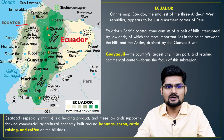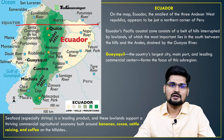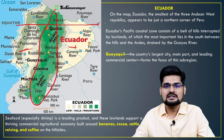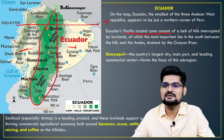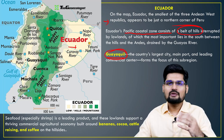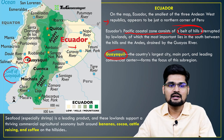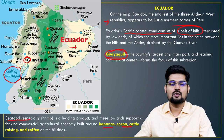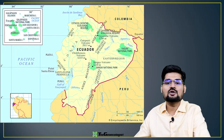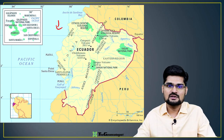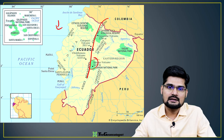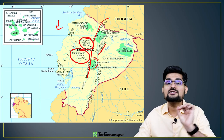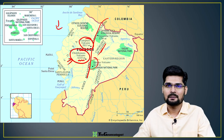Ecuador gets its name from the equator passing through it. The central region is the Andean mountain, which divides the country into east and west. The Ecuador Pacific Coastal Zone consists of a belt of hills interrupted by lowlands. Guayaquil is the major commercial center, situated in the Gulf of Guayaquil, handling most trade. Seafood, bananas, cocoa, cattle raising, and coffee are the mainstay of the economy. Ecuador is known for notable volcanoes: Chimborazo is the highest at 6,310 meters, and Cotopaxi are the two major ones.